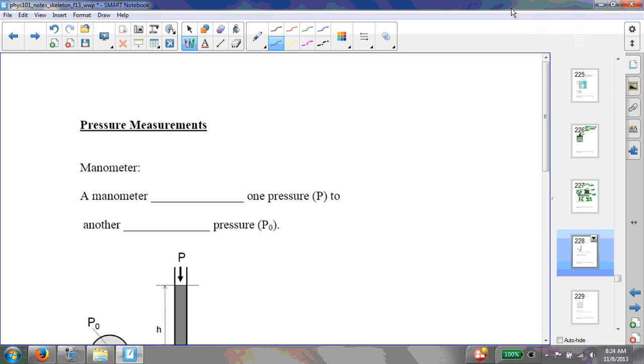All right, so now we're going to use some of these ideas about pressure and density to look at some devices that are used to measure unknown pressure. The first of these devices is called a manometer, and a manometer basically just compares one pressure to another known pressure.